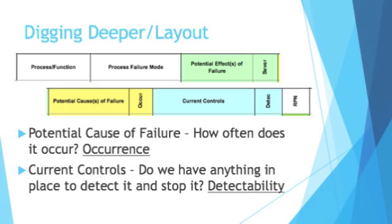The final thing we want to look at is current controls — do we have anything in place to detect the problem or prevent it? This gives us our final numeric score: detectability. Once you have a severity, an occurrence, and a detectability, those all multiply together to give you your final number, which is your RPN — a risk priority number. It tells you how bad the problem is, including all three categories.